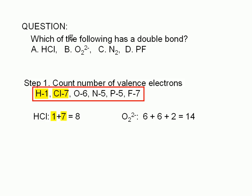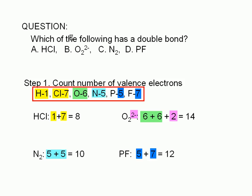A peroxide ion has a total of 14 valence electrons. Each oxygen has six valence electrons, but peroxide has a negative two charge, which means two additional electrons: six plus six plus two equals 14. The nitrogen molecule has a total of ten valence electrons, five from each of the nitrogen atoms. And the phosphorus fluoride molecule has 12 valence electrons — five from phosphorus plus seven from fluorine.